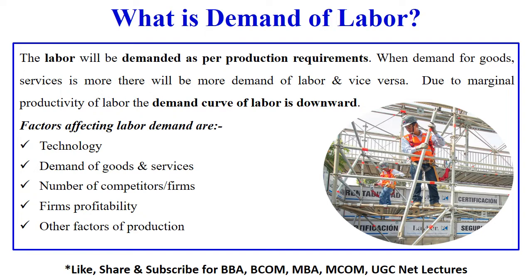The demand curve of labor is downward sloping, and this is due to the marginal productivity of labor. There are some other factors that directly affect labor demand. The first important factor is the technological factor — if we apply the latest advanced technology instead of labor, the demand for labor will reduce. Labor demand is also derived from the demand for goods and services. Other factors of production like competitors and the type of firm also affect labor demand.